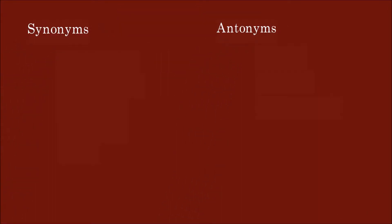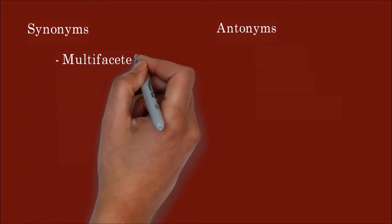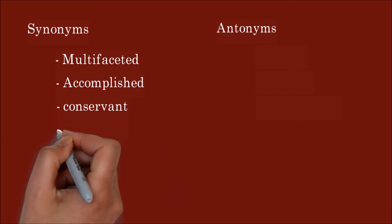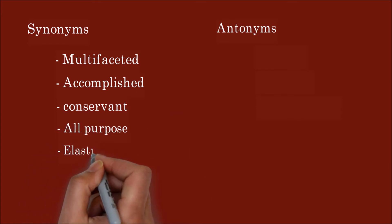Now we will look at a few synonyms and antonyms of protean. Multifaceted. Accomplished. Conversant. All-purpose. Elastic.